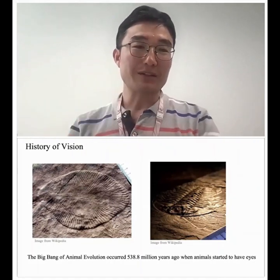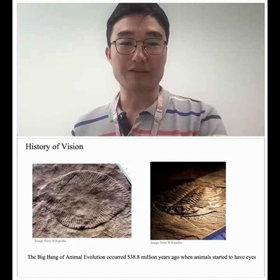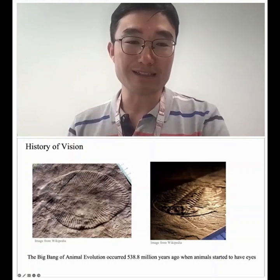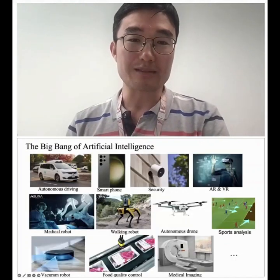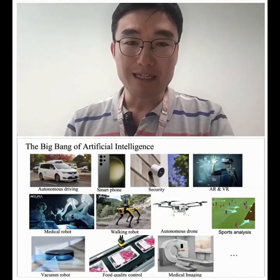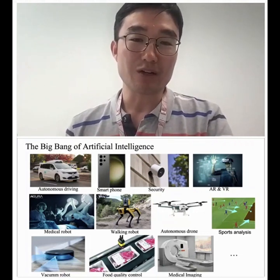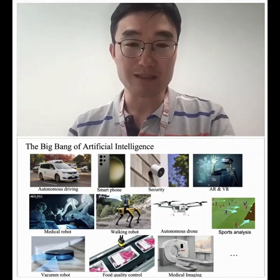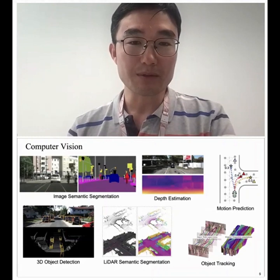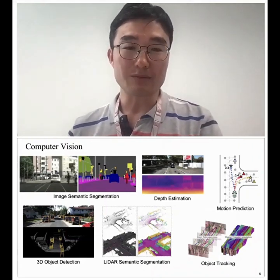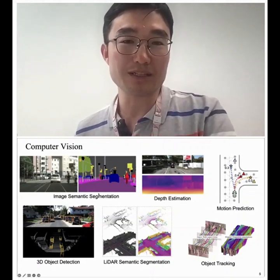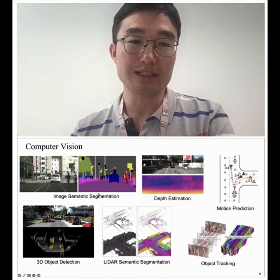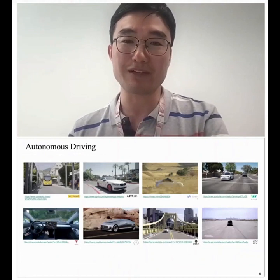If you check the history of vision, 500 million years ago we had a big bang for animal evolution. When animals developed eyes and could start seeing, animal species increased dramatically. Today we see a similar big bang of artificial intelligence — autonomous driving cars, robots for medical purposes and assistant purposes. Behind these AI systems, one very important function is to see — letting the machine see — which is what we call computer vision.